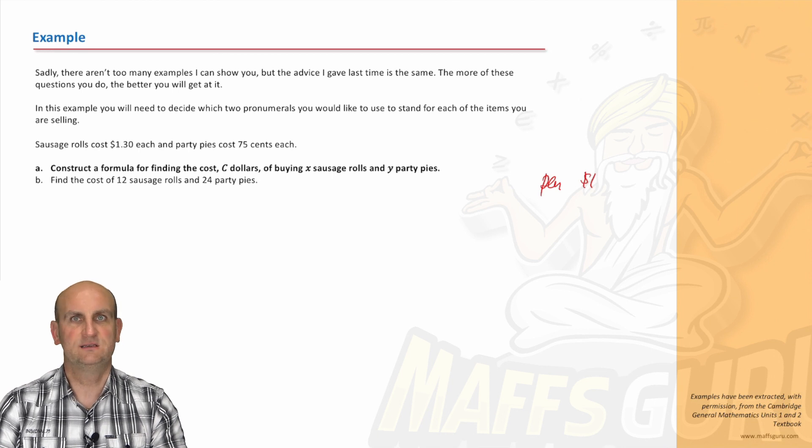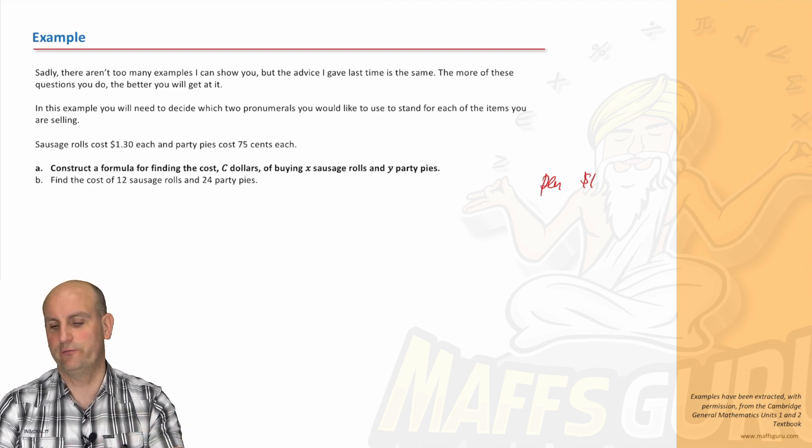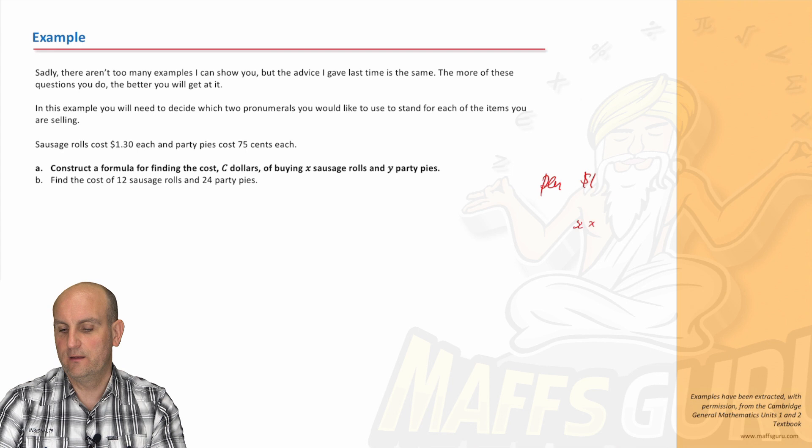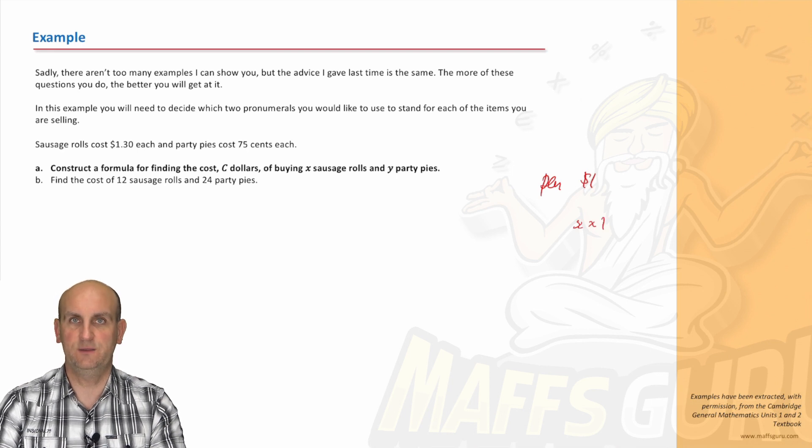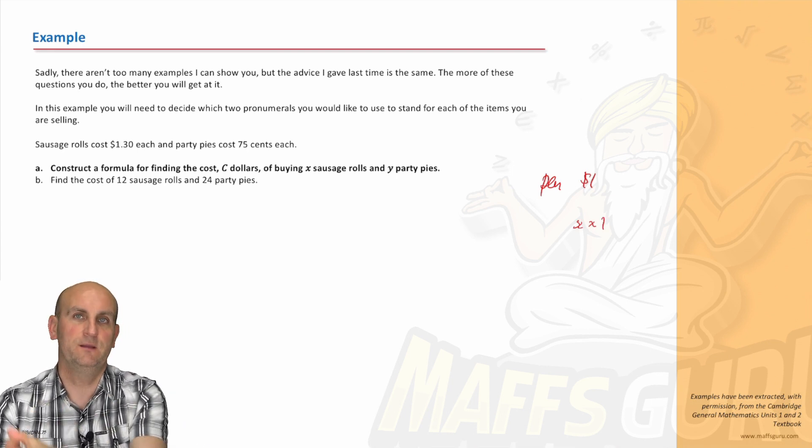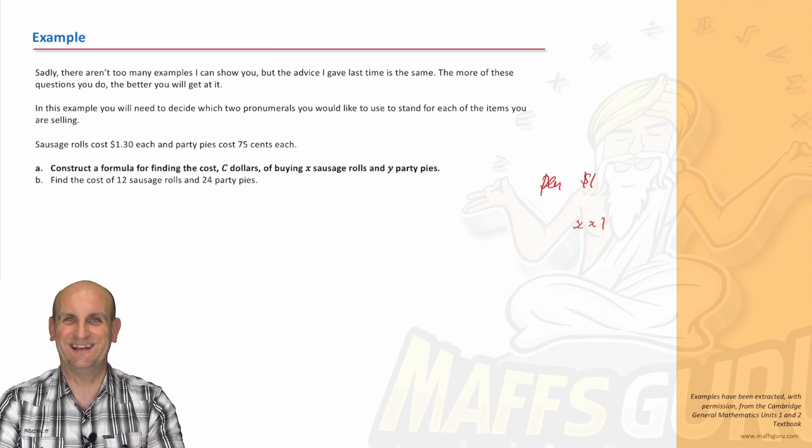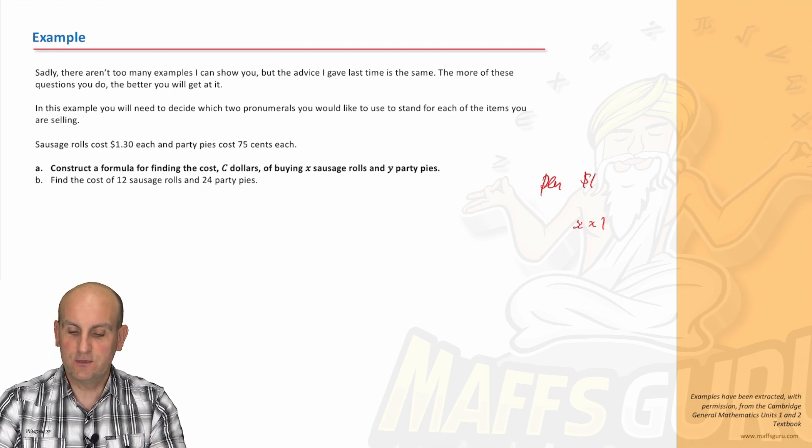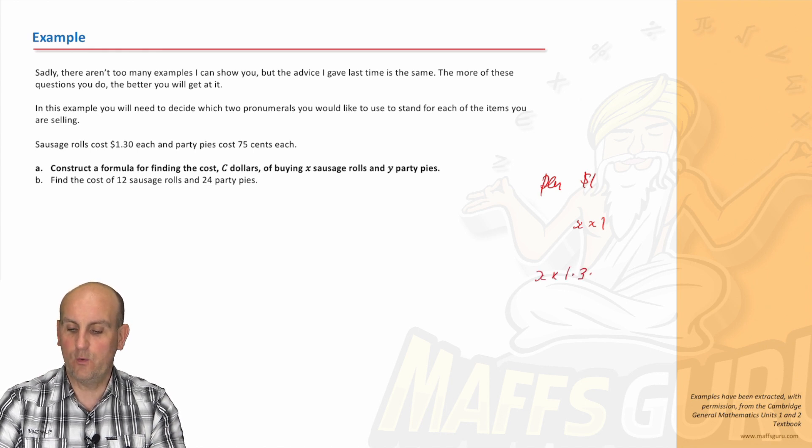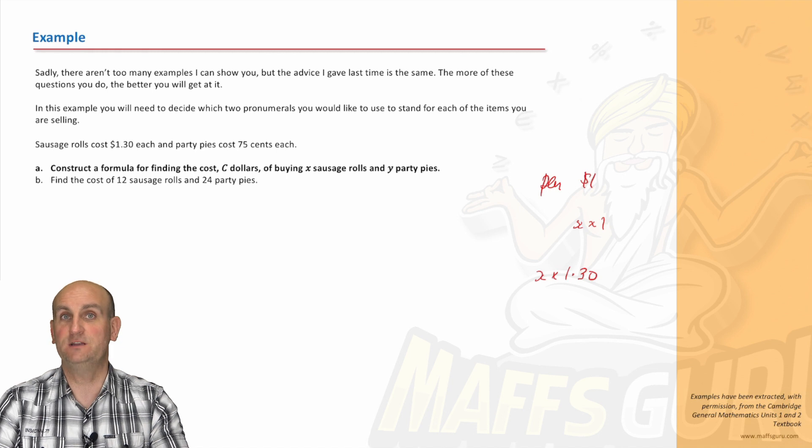Well, how much would X pens cost? Well, it would be X times one in that situation, yeah? Because we take the number and multiply it by the cost. Hold on a moment. We now know we've got X sausage rolls. So, the number of sausage rolls is X and I know they are $1.30 each. That's how much I'm going to raise from selling sausage rolls.